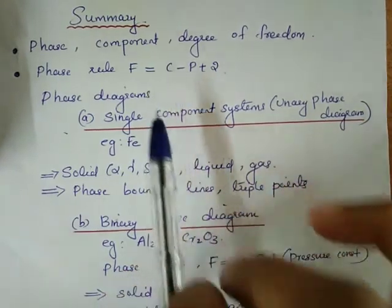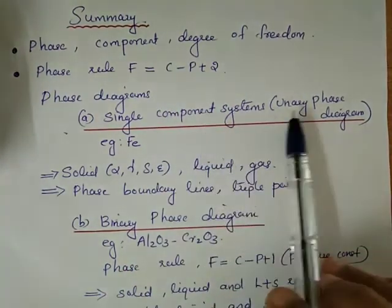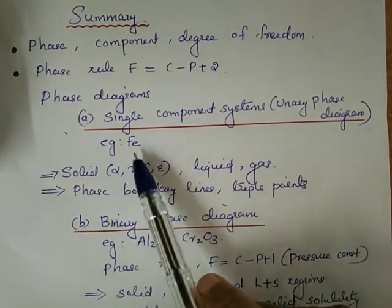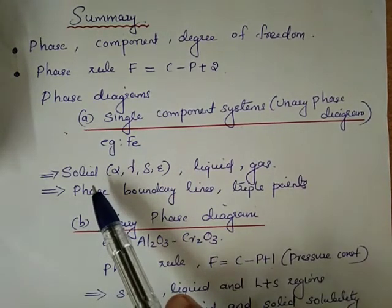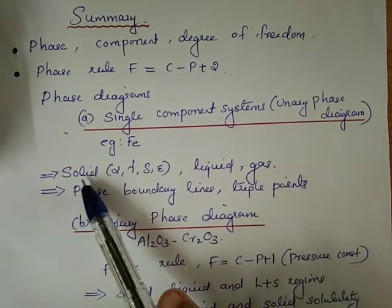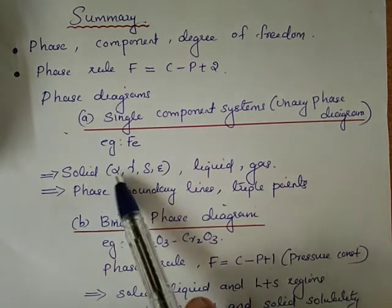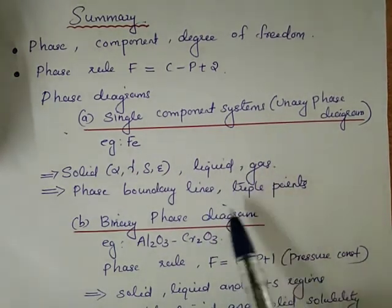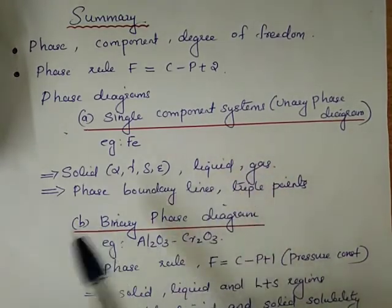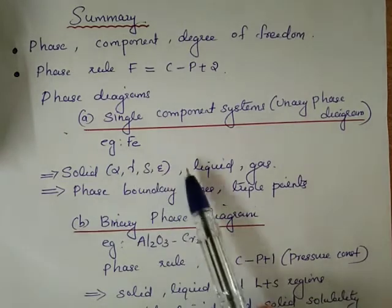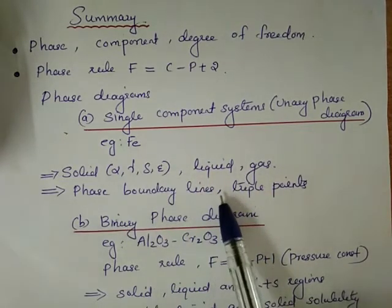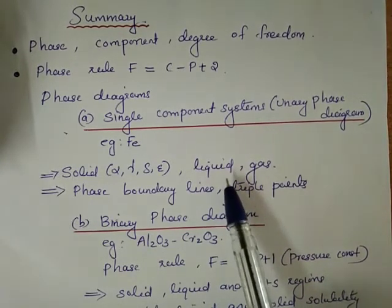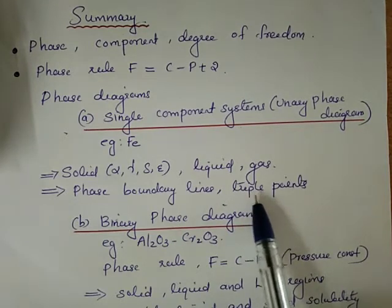Different phase diagrams are reviewed. First, single-component systems: the unary phase diagram. In our syllabus, we study the example of iron. The iron phase diagram includes different solid phases: alpha, gamma, delta, and epsilon, as well as liquid and gaseous phases. Phases are separated by boundary lines, and there are triple points — points where three phases co-exist. The iron phase diagram has two triple points.